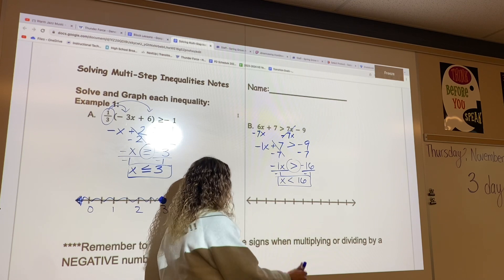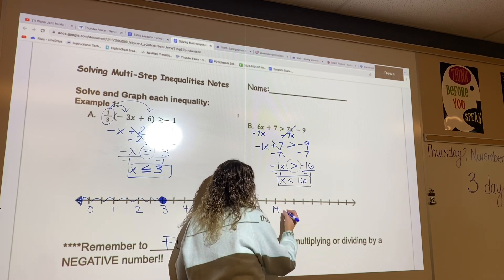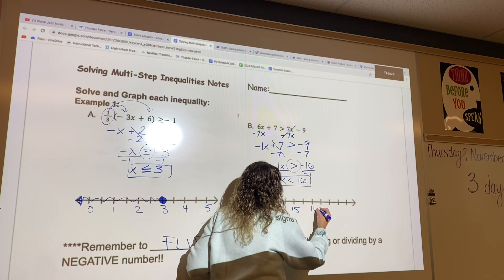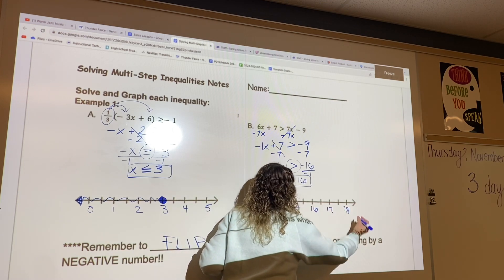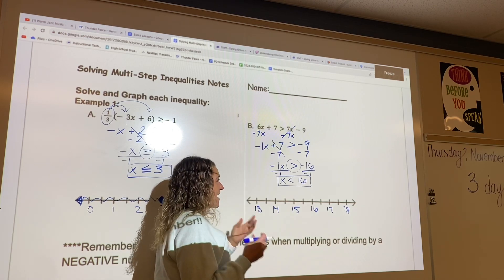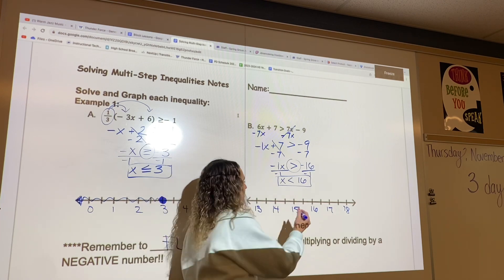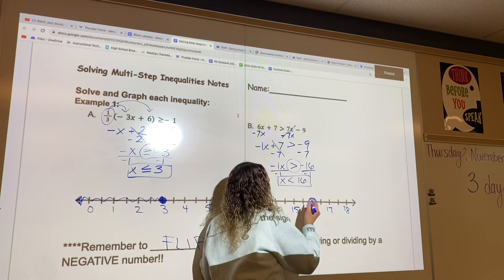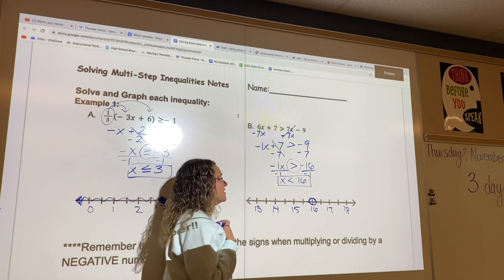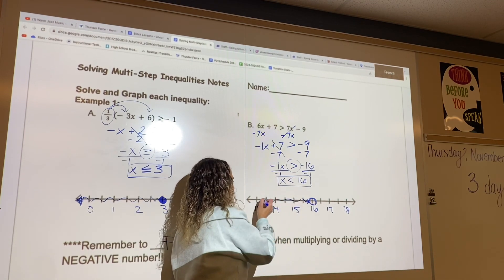Again, we're going to do our number line. I'm going to start with 13. I'm skipping every other just so that I can see it's spaced out a little bit better. Since I do not have the or equal to, I am going to have an open circle at 16, which tells us that 16 is not a solution, but everything less than 16 is a solution. So I'm going to also shade to the left.